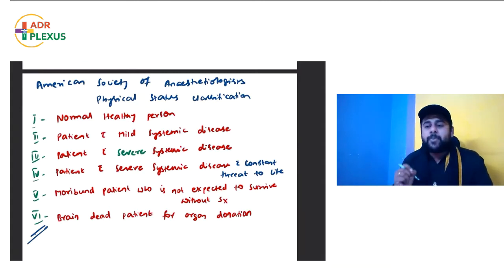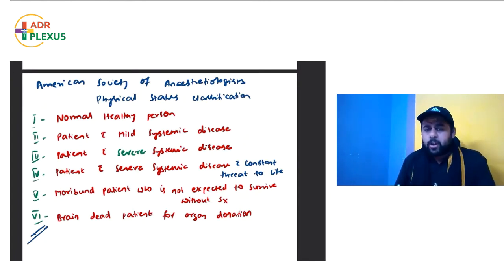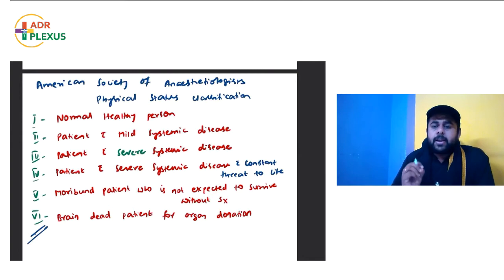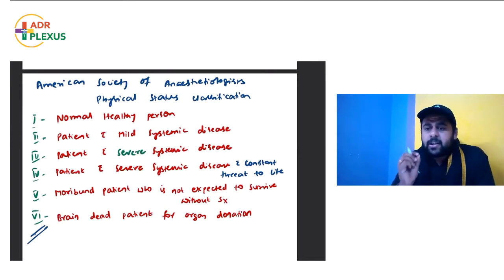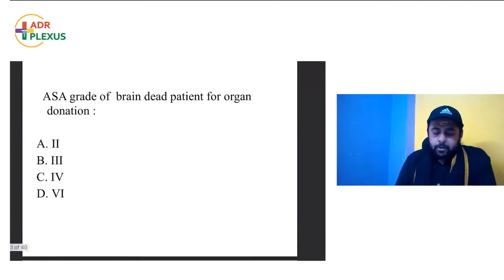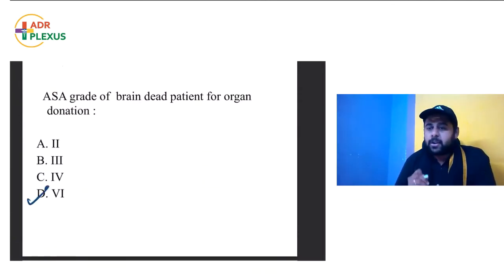ASA 6 is a brain-dead patient for organ donation. Do brain-dead patients going for organ donation need anesthesia? Yes, they do. The reason: in brain death, spinal reflexes below C1 may still be present, so for effective muscle relaxation you still need anesthesia. The ASA grade for brain-dead patients for organ donation is 6 — that is the correct answer.